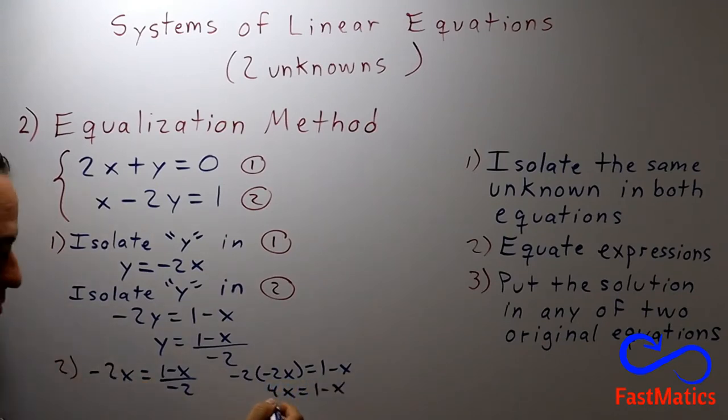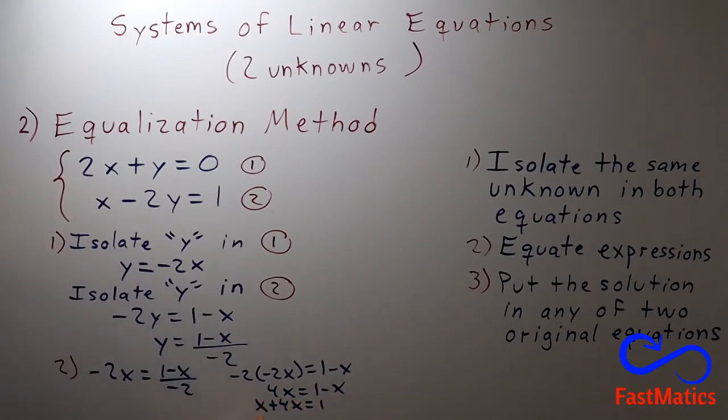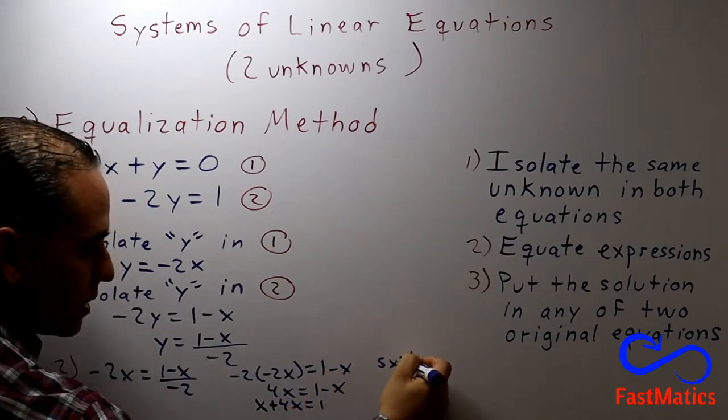And after that we will pass the negative x to the left side. That's a positive x. And then x plus 4x is 5x equals 1.